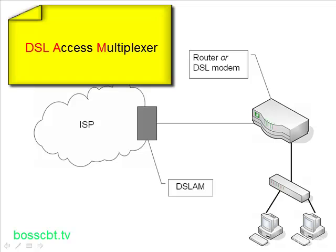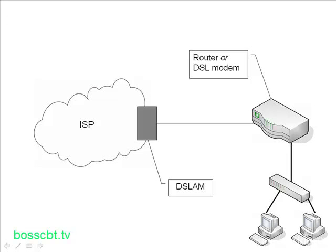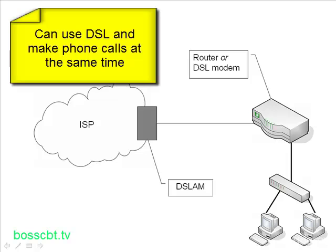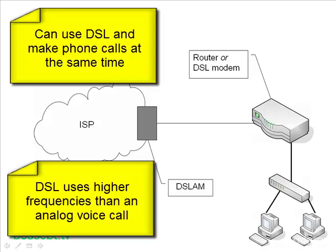One of the differences between DSL and analog modems is that with DSL, on the POTS line, you can use both a regular phone and DSL at the same time. Whereas with the analog modem, you were either on the phone or using the modem — you couldn't do both at the same time. With DSL, you can use both simultaneously because DSL and a regular analog phone call use different frequencies. DSL uses a higher frequency and the phone call uses a lower one, so they coexist without interference.